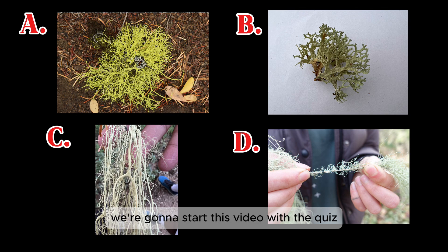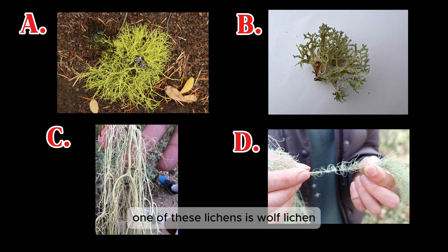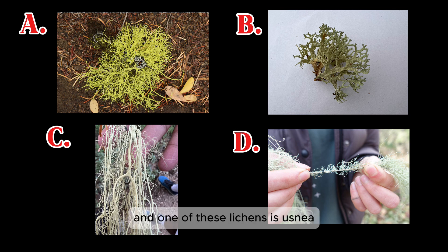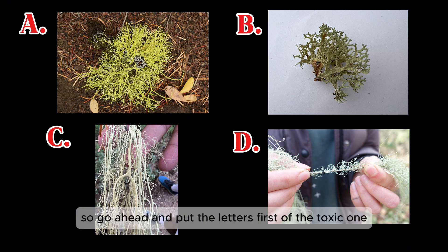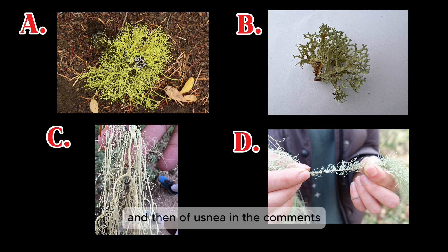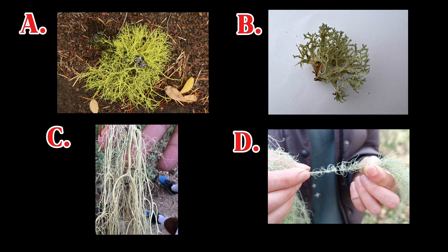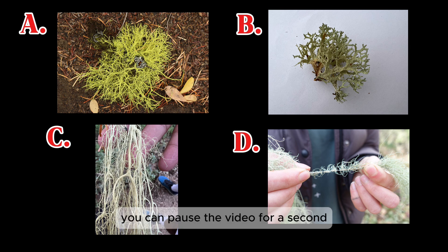We're going to start this video with a quiz — go ahead and put your answers in the comments. One of these lichens is wolf lichen, which is a toxic lichen, and one of these lichens is usnea, which is a commonly used medicinal lichen. Put the letter of the toxic one first, then the letter of usnea, in the comments. You can pause the video if you need some time.